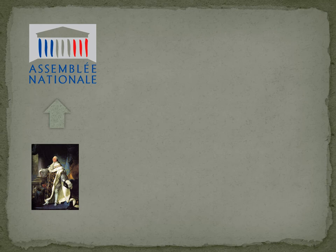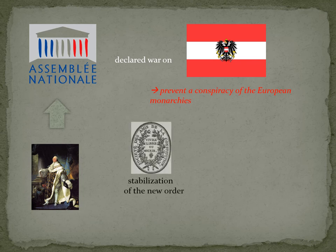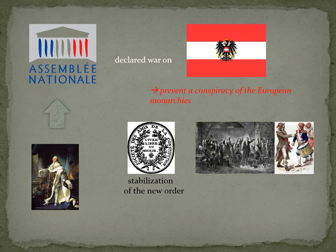On the 20th of April 1792, the National Assembly, advised by the king, declared war on Austria to prevent a conspiracy of the European monarchies against the revolution. The Feuillants hoped for stabilization of the new order. The Girondins, in contrast, who remained in the Jacobin Club, considered a spread of the revolution across all of Europe.